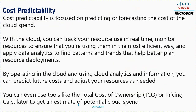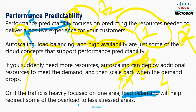So performance predictability means: auto scaling will increase resources or add a virtual machine when needed; load balancing will transfer requests to another server when one server can't handle the load; and high availability ensures that if one server is down, the resource will immediately be available from another server. We are predicting 100% high availability, auto scaling, and load balancing — that is all about predicting performance.